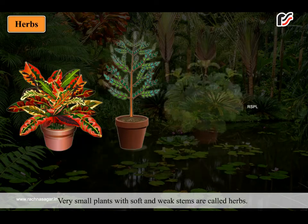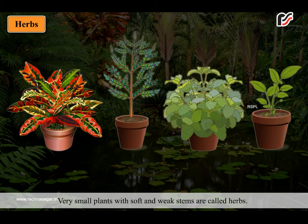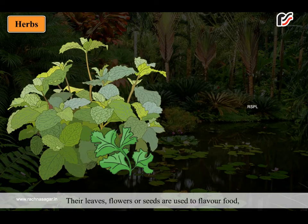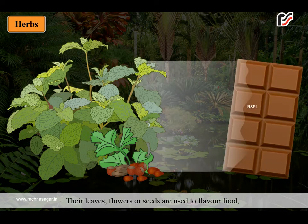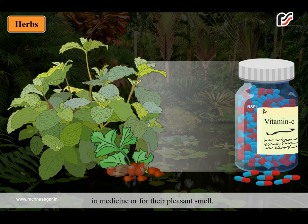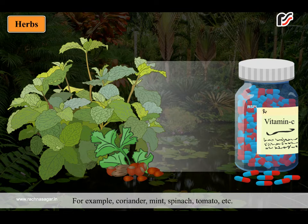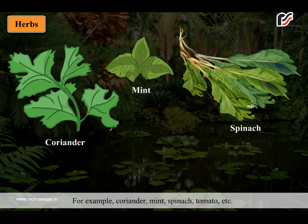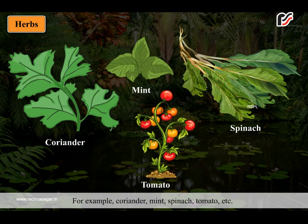Very small plants with soft and weak stems are called herbs. They live for only a few months. Their leaves, flowers or seeds are used to flavor food, in medicine, or for their pleasant smell. For example, coriander, mint, spinach, tomato, etc.